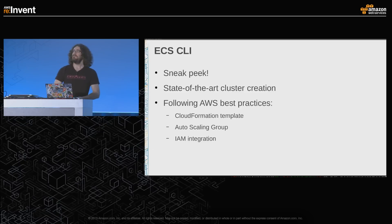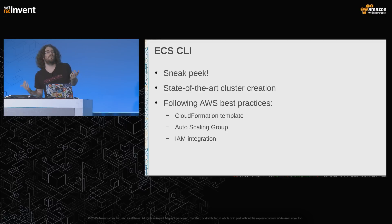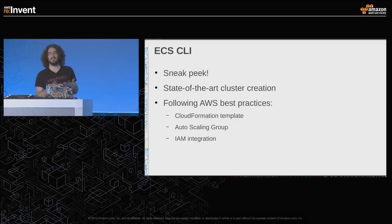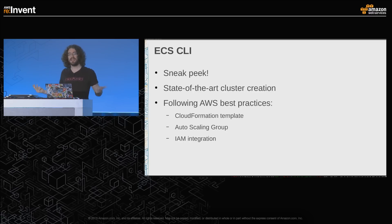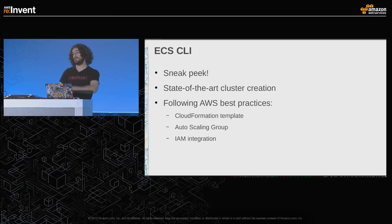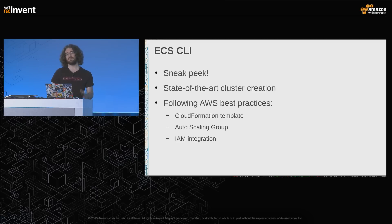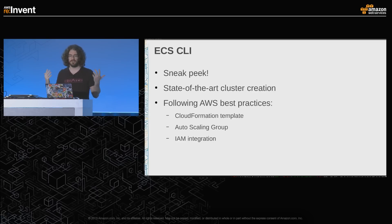I point my client to this cluster so when I do Docker commands, instead of talking to my local machine I'm talking to the cluster. When I do Docker version, in the server section it tells me I'm talking to Swarm. When I do Docker info, instead of showing one node, it gives me a list of the five nodes on my cluster. It kind of follows the Docker API, except now I'm talking to a cluster.